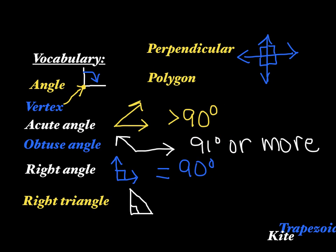Polygon is going to be any shape that doesn't have a curved side, and it's closed.